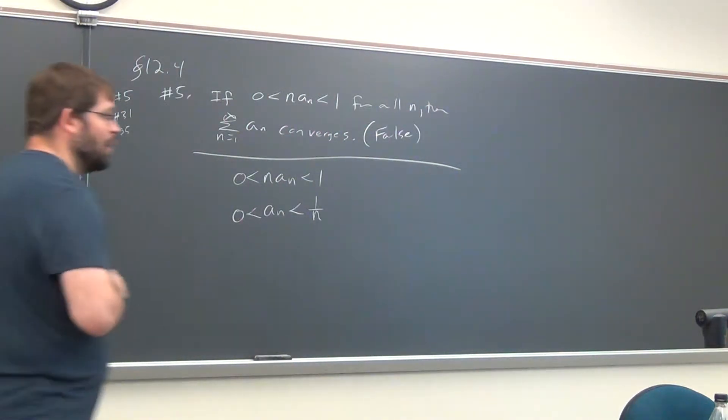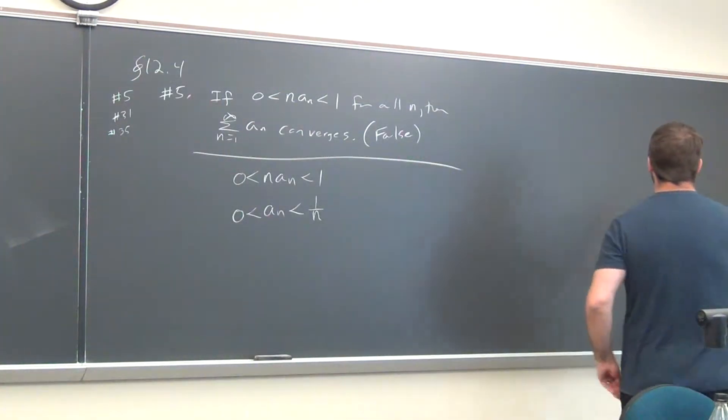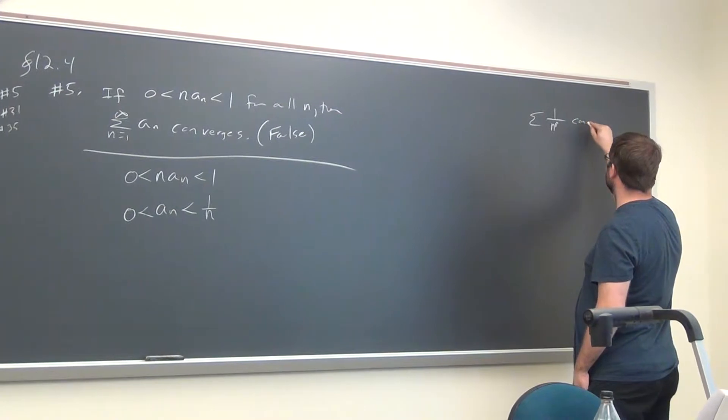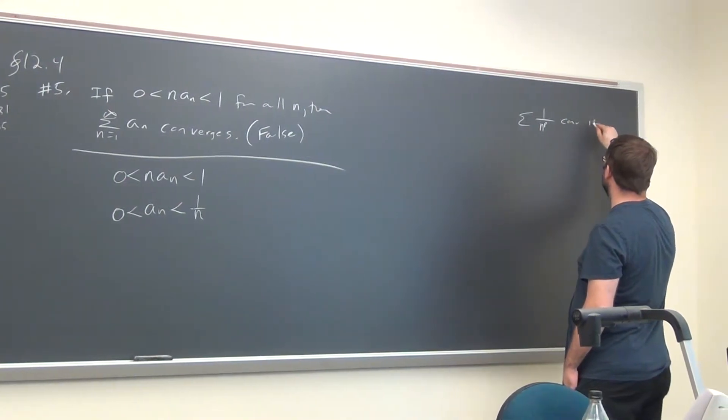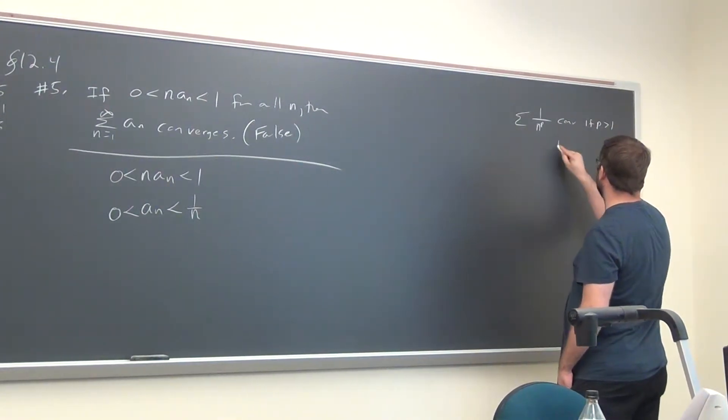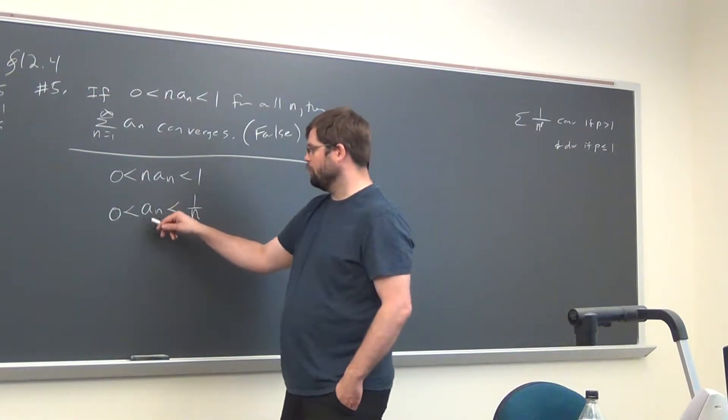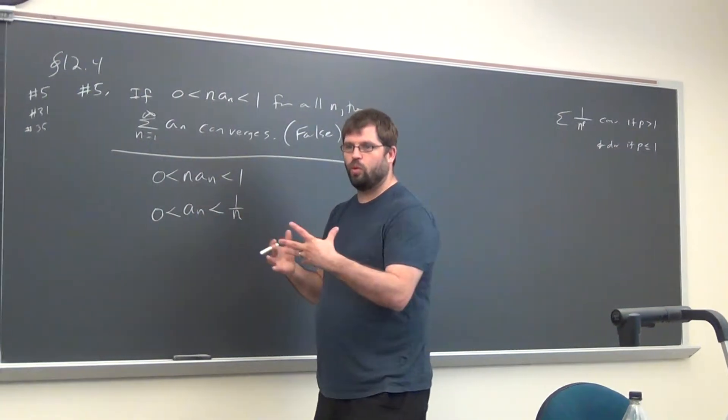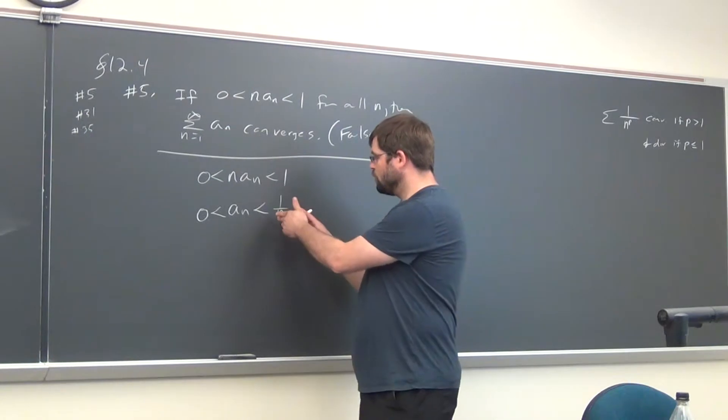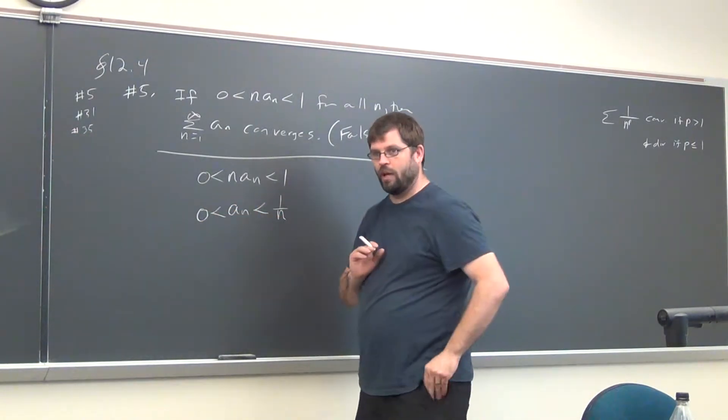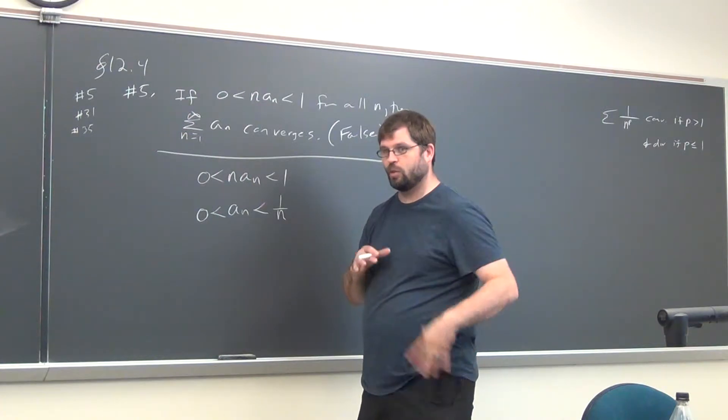Remember, when we talk about p series, the series of 1 over n to the p converges if p is greater than 1 and diverges if p is less than or equal to 1. You've got to make some other tweak on it - something that's just a little bit smaller than this, but you still get infinity when you add it all up.